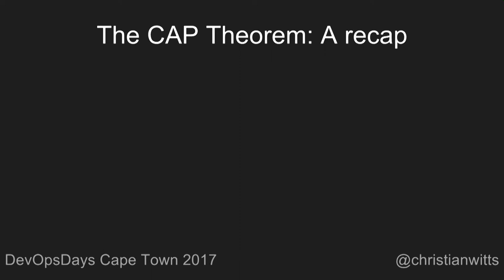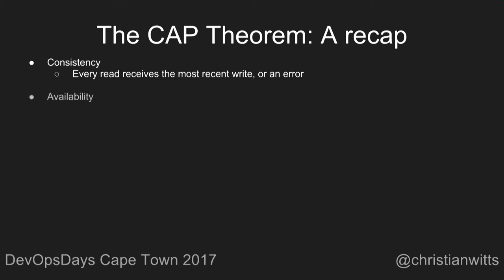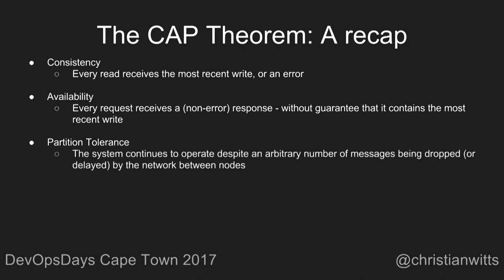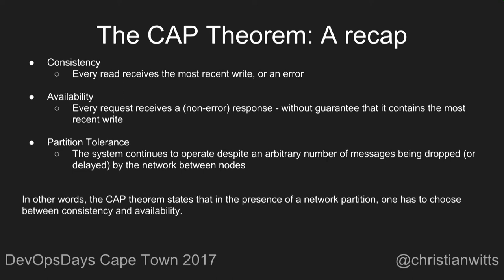Quick recap of the CAP theorem. Consistency is defined as every read receiving the most recent write or an error. Availability means every request receives a response, but with no guarantee it contains the most recent write. Partition tolerance means a system continues to operate in the face of messages being dropped by the network — so in the presence of a network partition, one has to choose between consistency and availability.